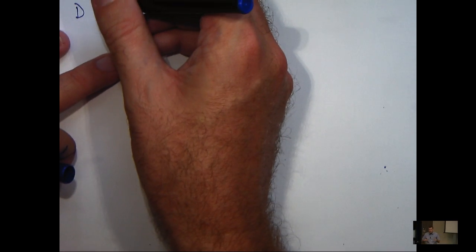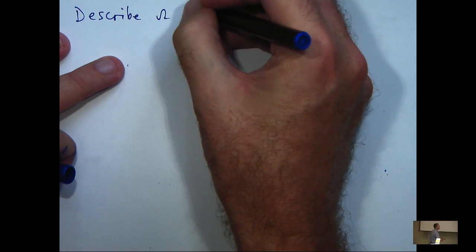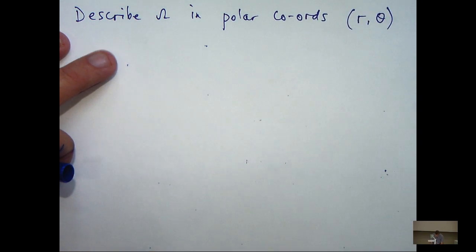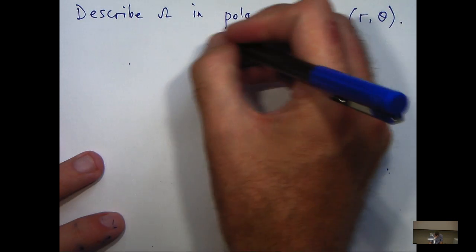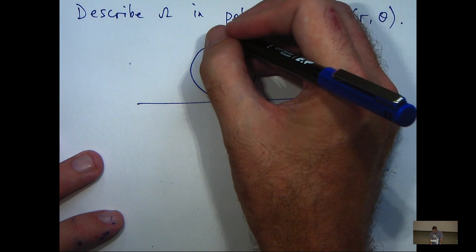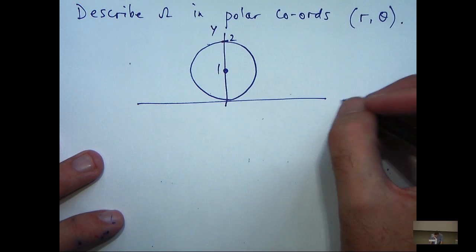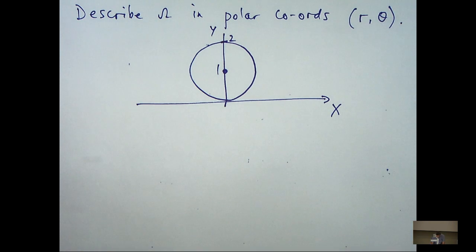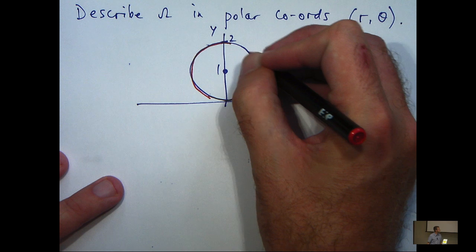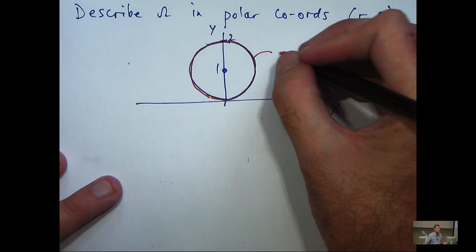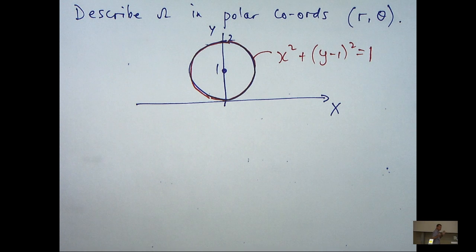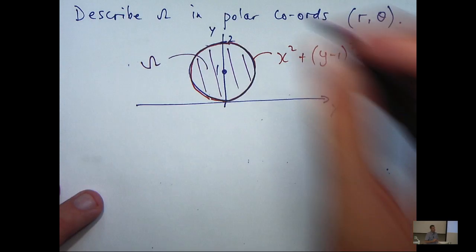So now, we would like to describe our region of integration in polar coordinates r and theta. So let's draw a slightly larger picture. And the boundary or the curve that actually encloses our disk has the following equation.